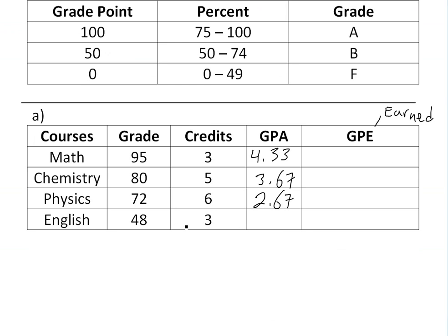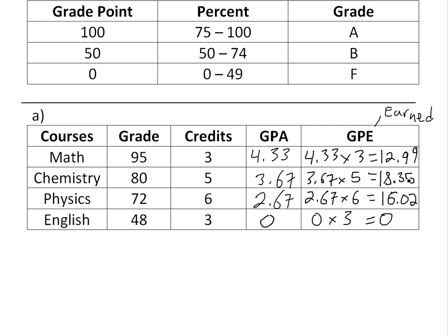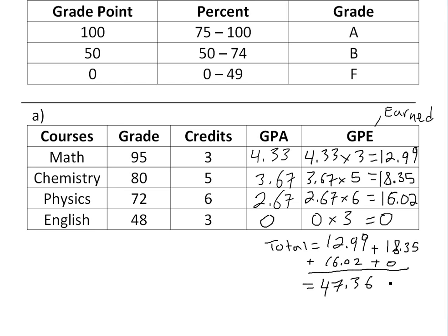The grade points earned (GPE) is that per-credit GPA value multiplied by the number of credits. So: 4.33 times 3 equals 12.99; 3.67 times 5 equals 18.35; 2.67 times 6 equals 16.02; and 0 times 3 equals 0 for English. Summing all of these up, we get a total of 47.36 grade points earned.